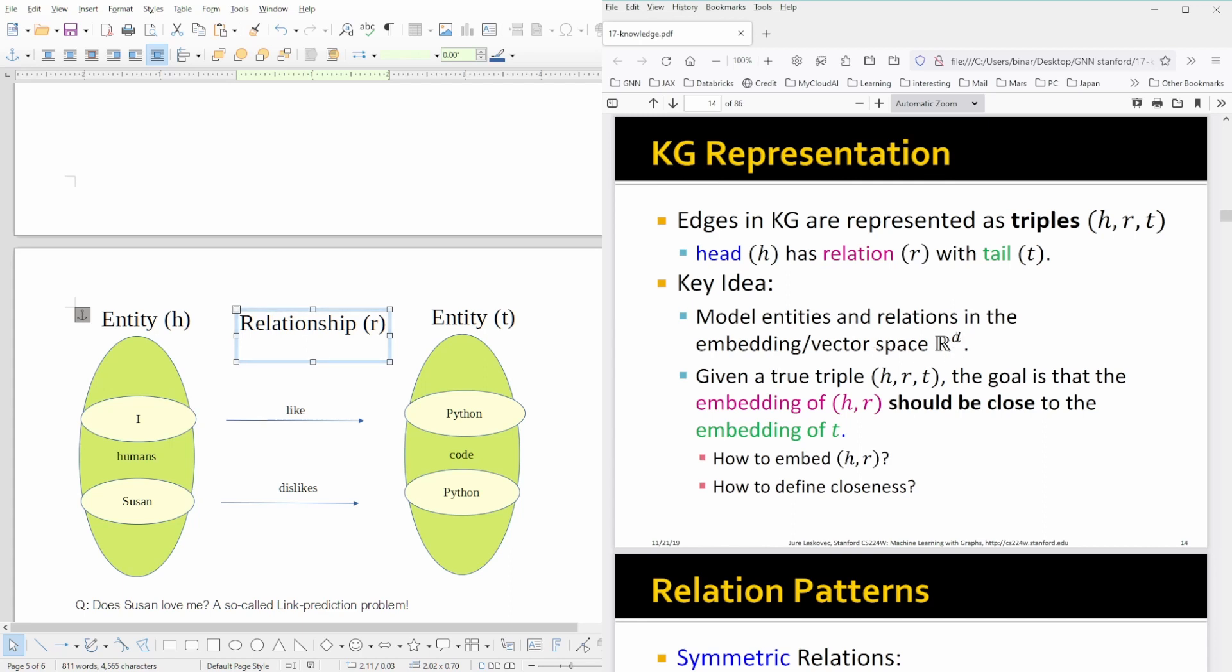And we hope that the dimensionality of this vector space is a reduced dimensionality given our initial problem. And given a true triplet like 'I like Python' (h, r, t), the goal is that the embedding—now the transformation, the mapping from this graph structure non-Euclidean structure in an embedding space—should have the distance function and whatsoever should be a vector space R^d should be close. The embedding of (h, r)—so of 'I like,' the world of 'I like': I like bikes, I like skiing, I like biking, I like swimming—all this embedding should be close to the embedding of t. And t is our tail, and our tail here is Python.